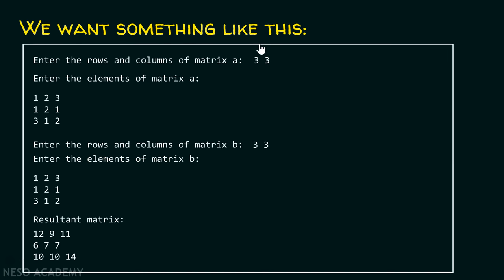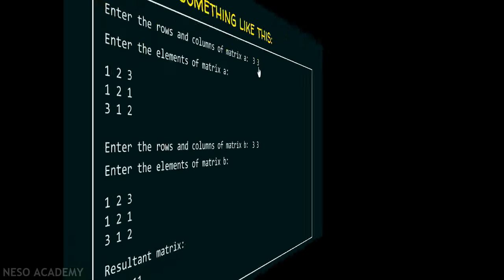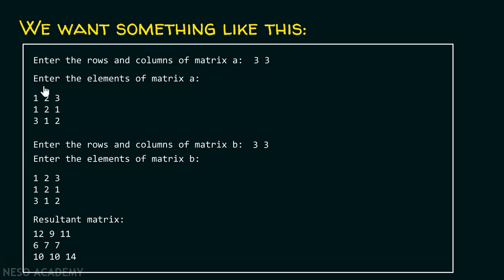We want to ask the user to enter the rows and columns of matrix A, and the user will input some values which we have to store somewhere. After that, we will ask the user to enter the elements of matrix A, then ask for the rows and columns of matrix B, and enter the elements of matrix B. Finally, we will calculate the result by multiplying these two matrices.